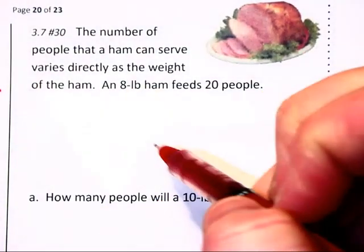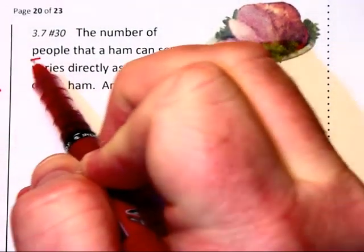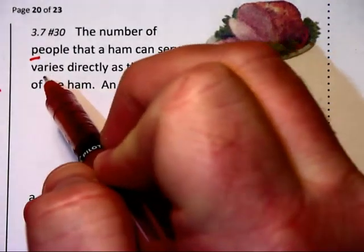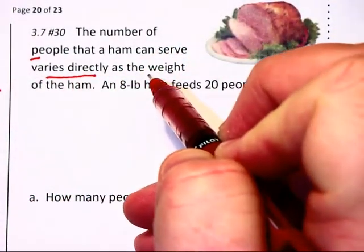The number of people that a ham can serve, I think P for people or N for number, varies directly as the weight of the ham.